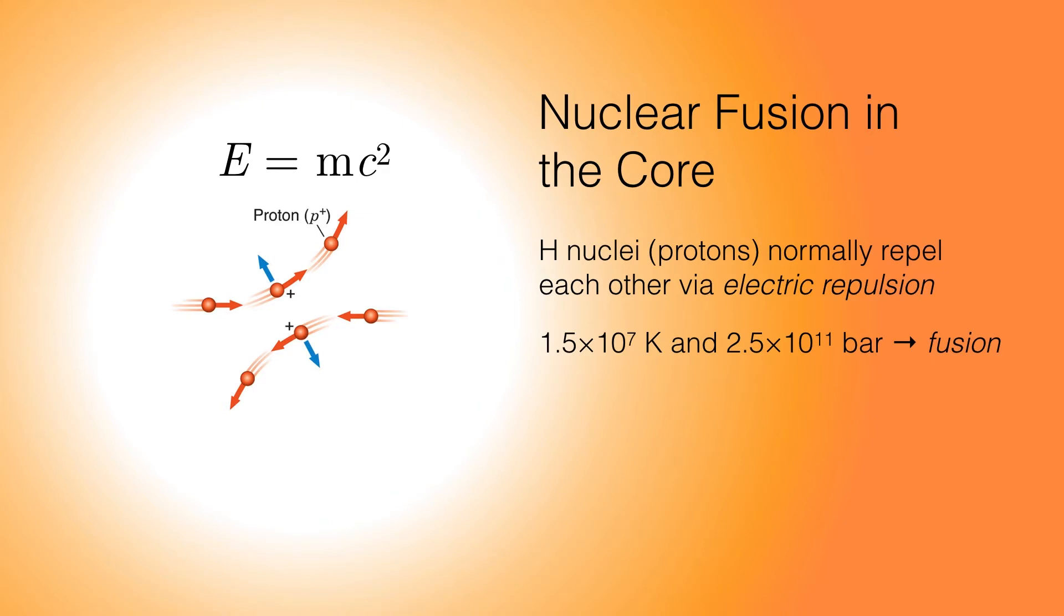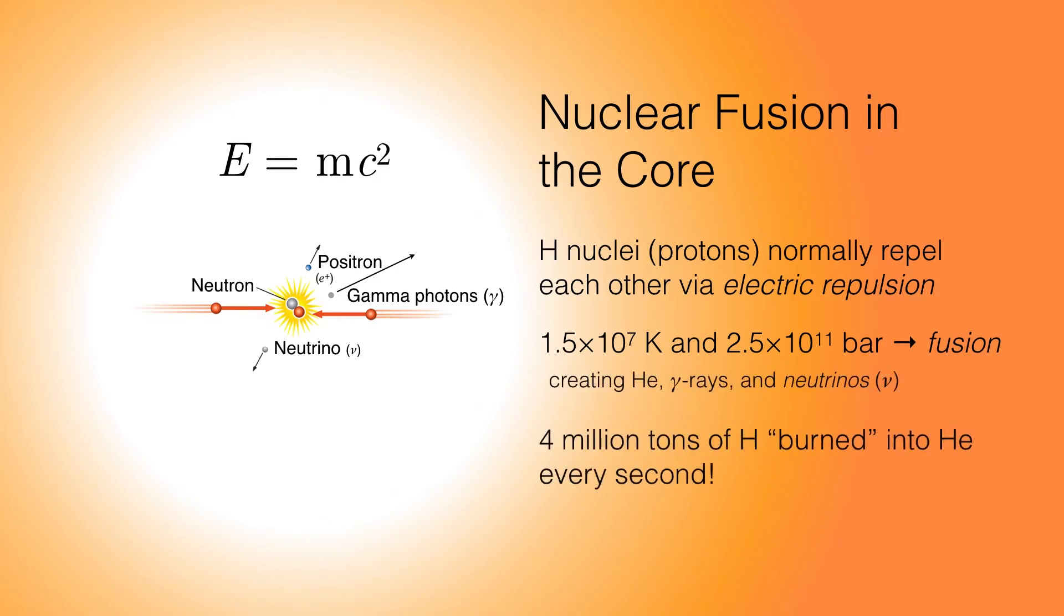Fusion is the manifestation of Einstein's famous equation E equals MC squared, where energy is equivalent to the mass multiplied by the speed of light squared. We have protons coming together, they fuse and they unleash energy in the process. The energy is carried away in the form of gamma photons, but some new particles are formed in the process. About 4 million tons of hydrogen are burned into helium every second at the core of the Sun.